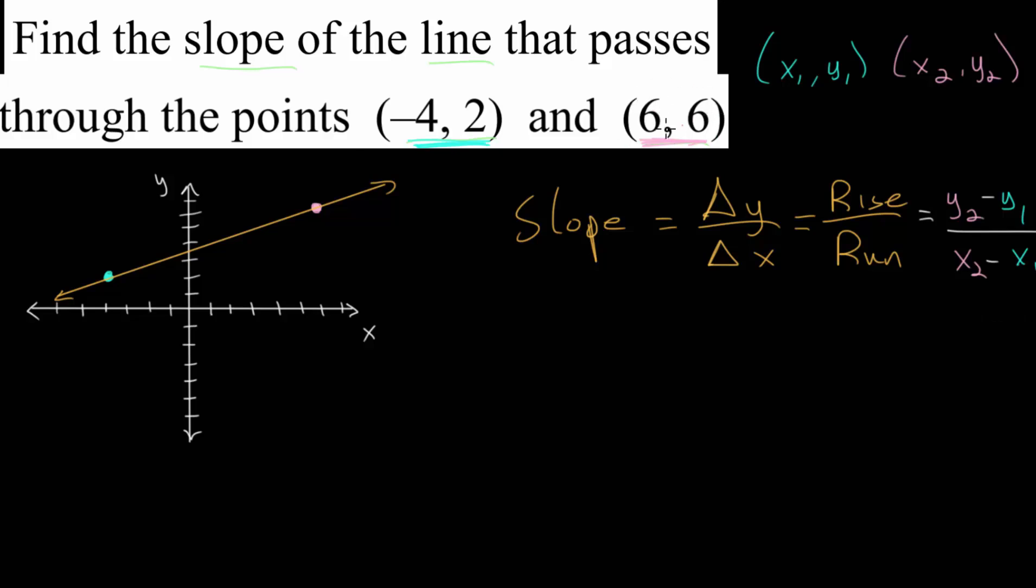And if we look at this point here, this 6, 6, we can call this one x2 and this one y2. And similarly, for this point minus 4, 2, this can be x1 comma y1. And at this point, we just need to plug everything into our formula here.